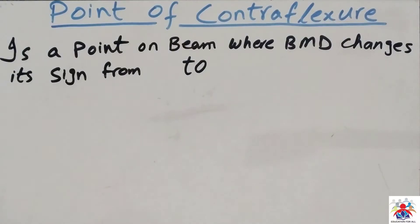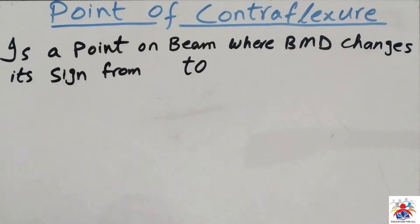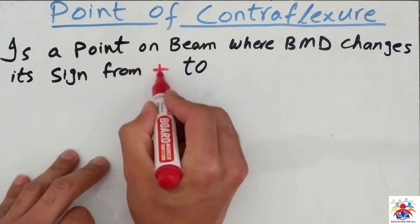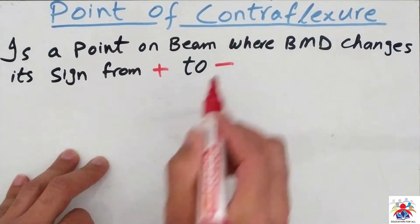Hello and welcome to my YouTube channel. In this video I am going to explain what is a point of contraflexure — a point on a beam where bending moment changes its sign from positive to negative.